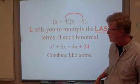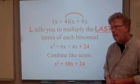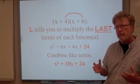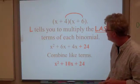Then we have to combine the like terms. We only have two of those, and they combine to form 10x. So FOIL method is a great way to speedily multiply a pair of binomials.